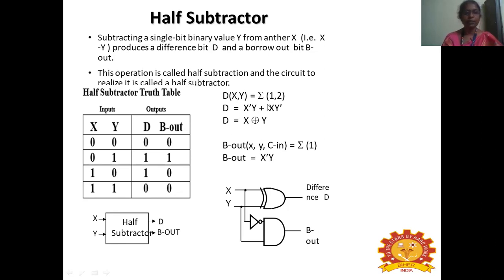When 0 minus 1: difference=1, borrow=1. When 1 minus 1: both difference and borrow are 0. Calculating the min terms: difference has min terms 1 and 2, so the expression is X'Y + XY', which is X XOR Y. For borrow, the min term is 1, so borrow = X'Y. These are realized with logic circuits.